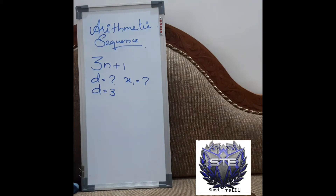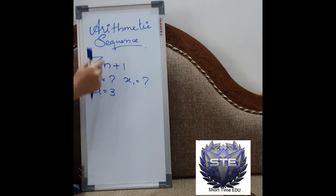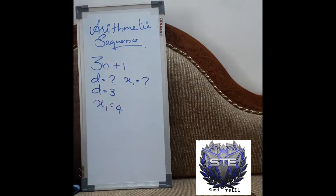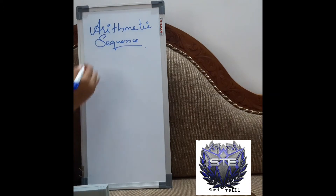Next, what is the first term? The first term will be determined by the operations and numbers excluding n. The numbers and operations excluding n give you x1. So remember: the number along with n is the common difference, and the remaining number after excluding n gives the first term.